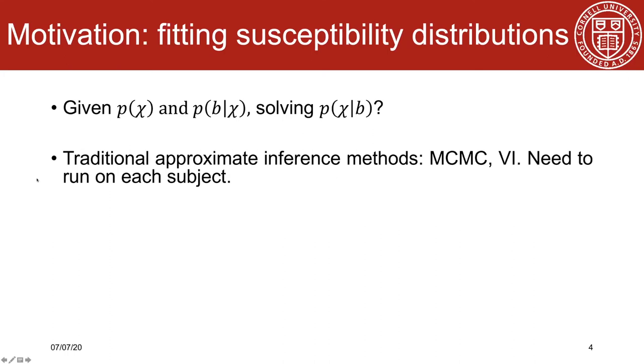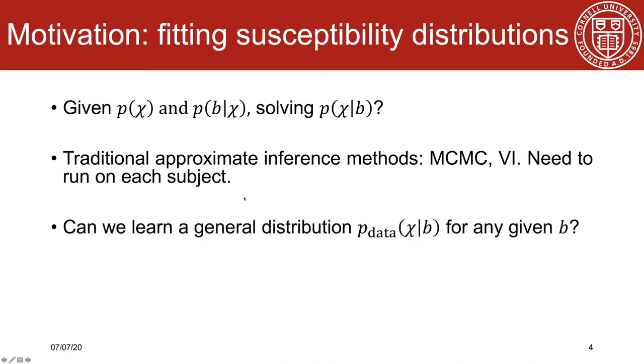But still, it needs to run on each subject. So here comes the question. If the pattern from b to posterior distribution chi is recoverable, then rather than solving the posterior distribution approximation for each b, can we learn to approximate a general distribution p_data of chi conditioned on b for any given b?